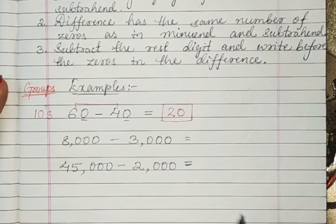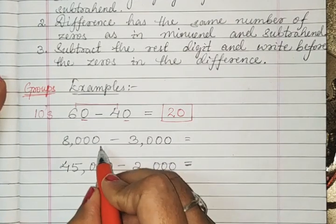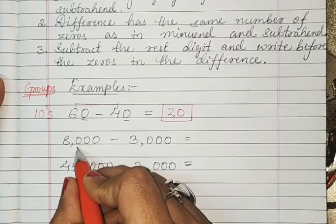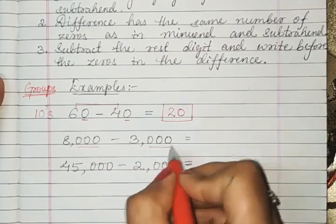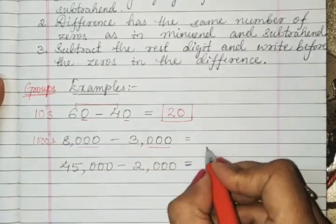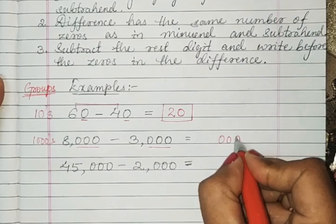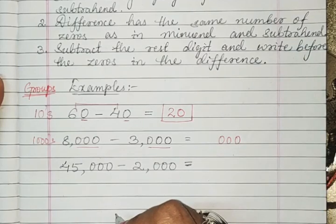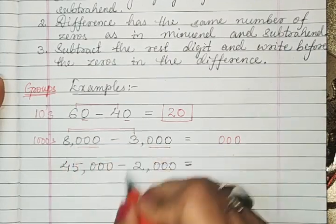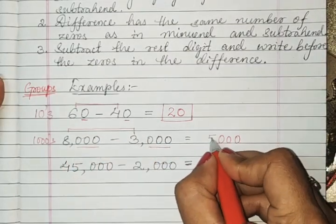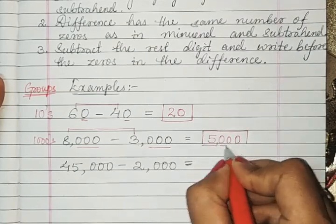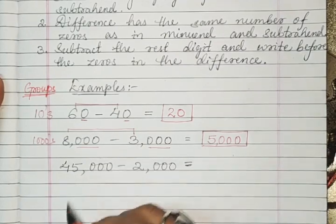Example two: 8000 minus 3000. First, check the group — there are three zeros, so it is the thousands group. Write three zeros in the difference. Now subtract the rest digit: eight minus three is five. Write five before the zeros, so the answer is 5000.